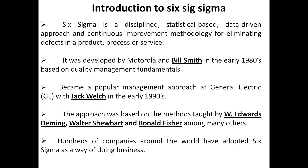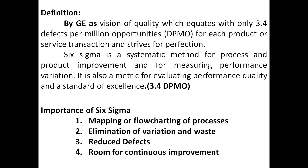Six Sigma aims for minimum defects and minimum variation. The definition allows for 3.4 defects per million opportunities (DPMO). That means in component manufacturing, only 3.4 components may go out of rejection. GE has a vision of quality which equates to 3.4 defects per million opportunities for each product or service transaction, striving for perfection.